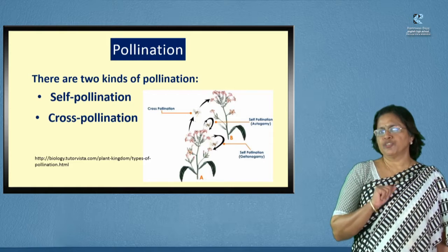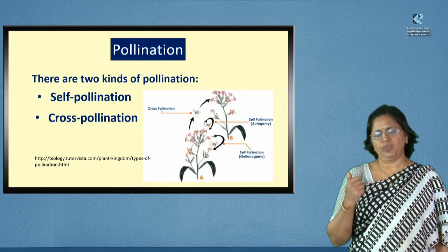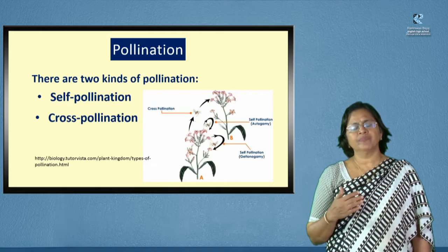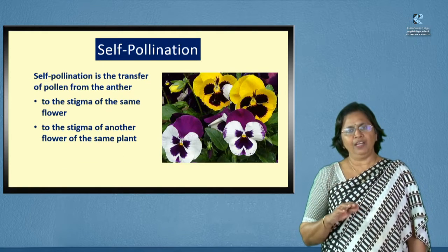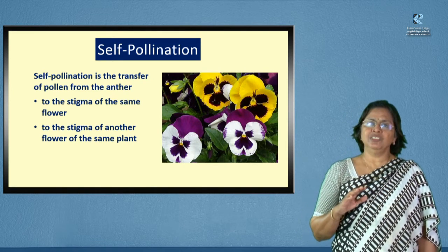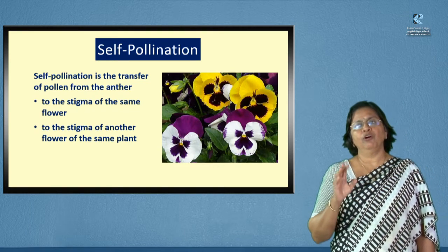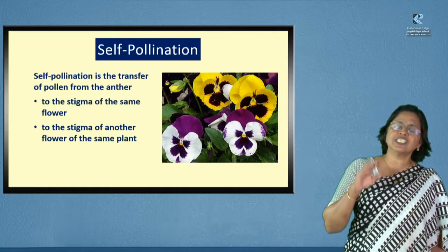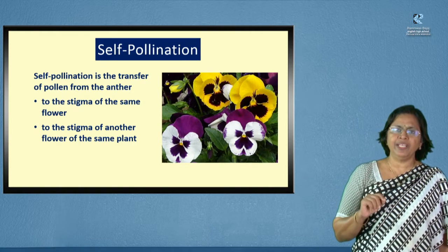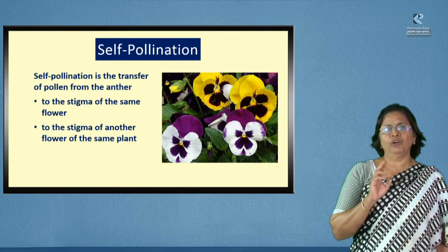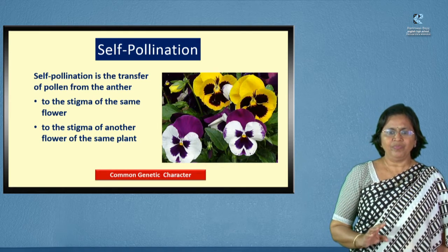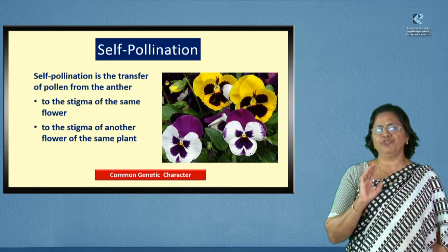Pollination is of two types: self-pollination and cross-pollination. Self-pollination can occur between the same flower — that means the pollen grain of a flower falls on its own stigma. Self-pollination is also when the pollen grain of a flower falls on the stigma of another flower but of the same plant. In other words, self-pollination means the genetic content of the pollen and the ovule pollen is the same. Common genetic character is important for self-pollination.